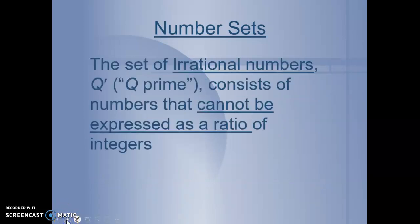The set of irrational numbers, Q prime, consists of numbers that cannot be expressed as a ratio of integers.